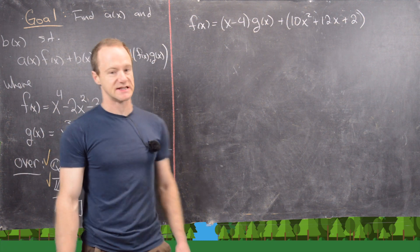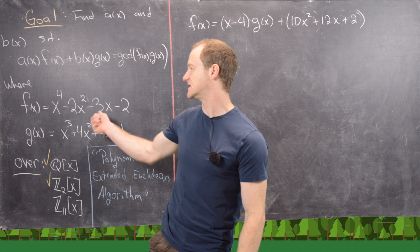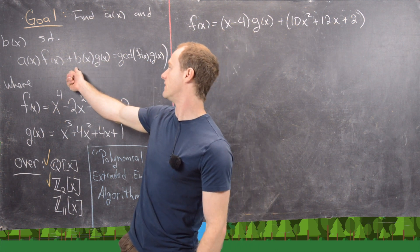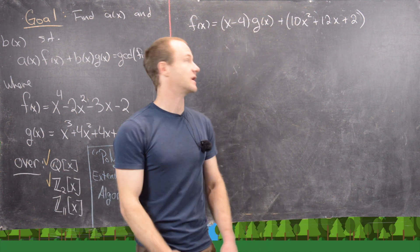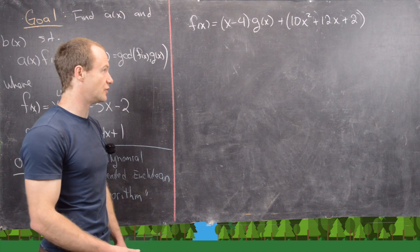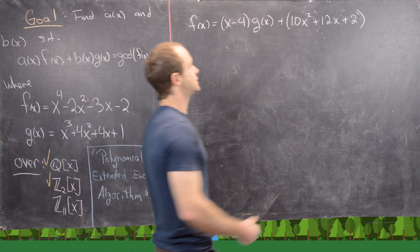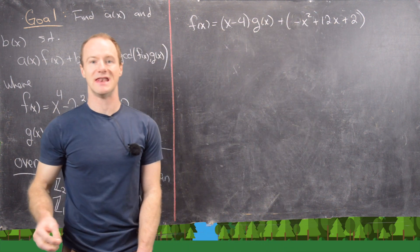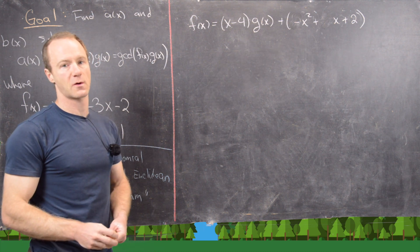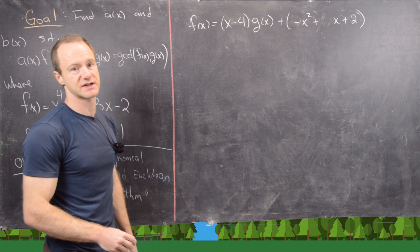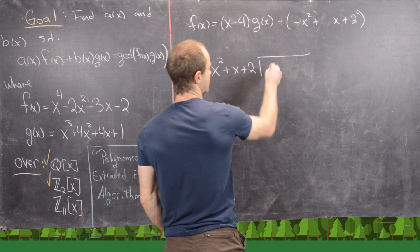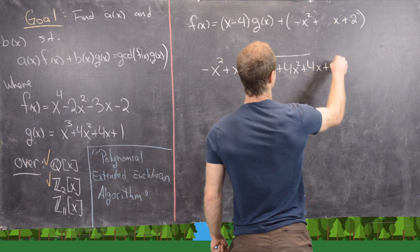Now let's look at what happens over Z11. We start from the first remainder of our calculation over Q, namely 10x² + 12x + 2, but reduce mod 11: 10 ≡ −1 and 12 ≡ 1, so this becomes −x² + x + 2. We now divide −x² + x + 2 into g(x) = x³ + 4x² + 4x + 1.